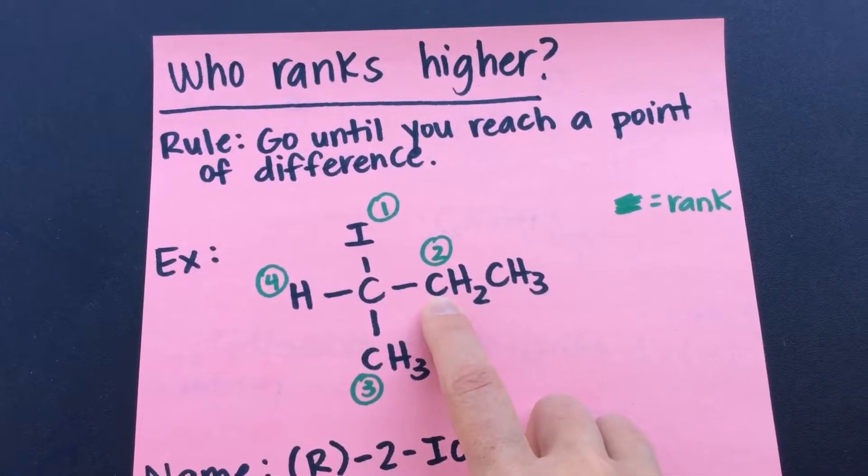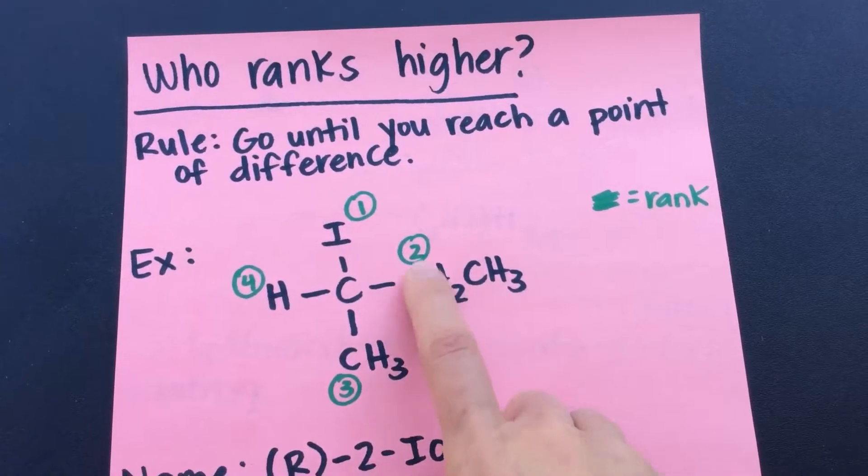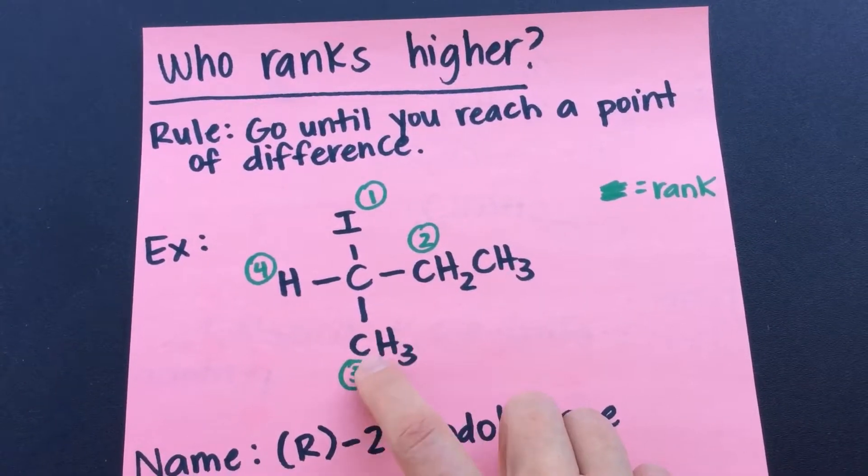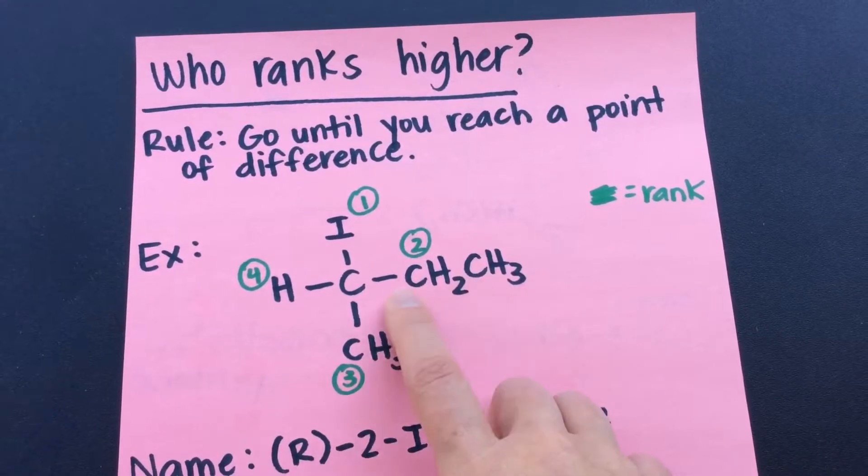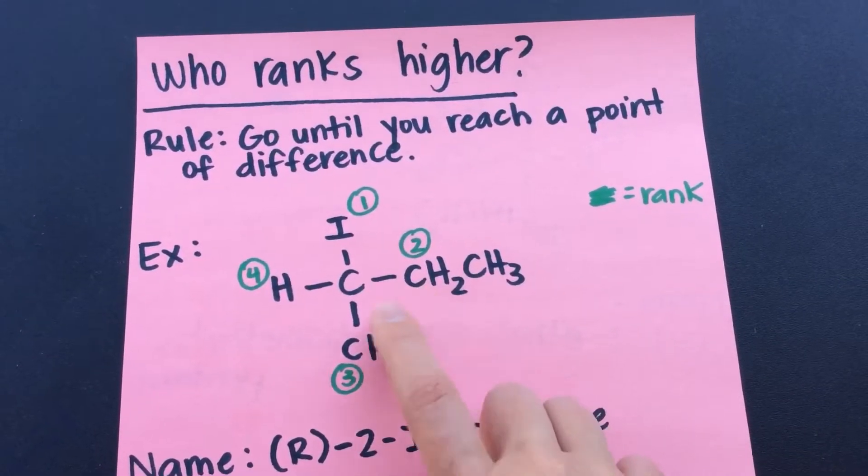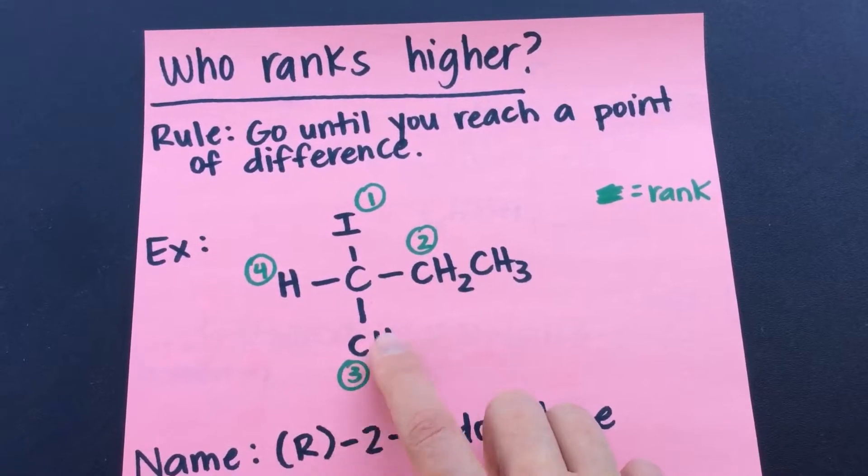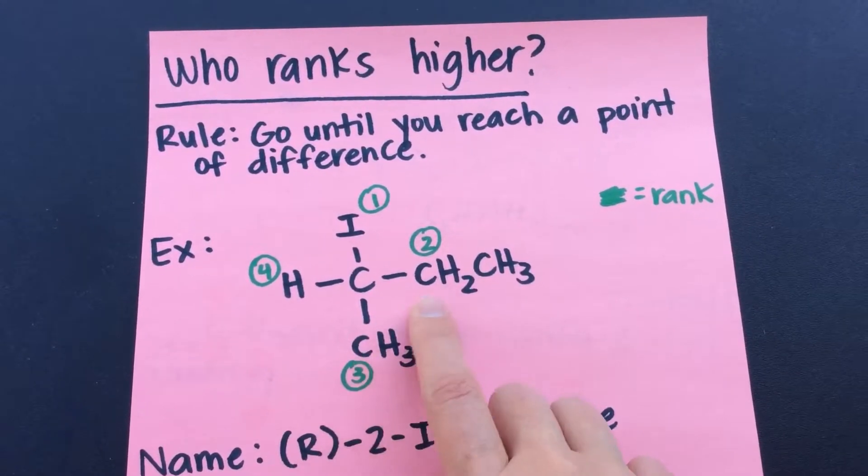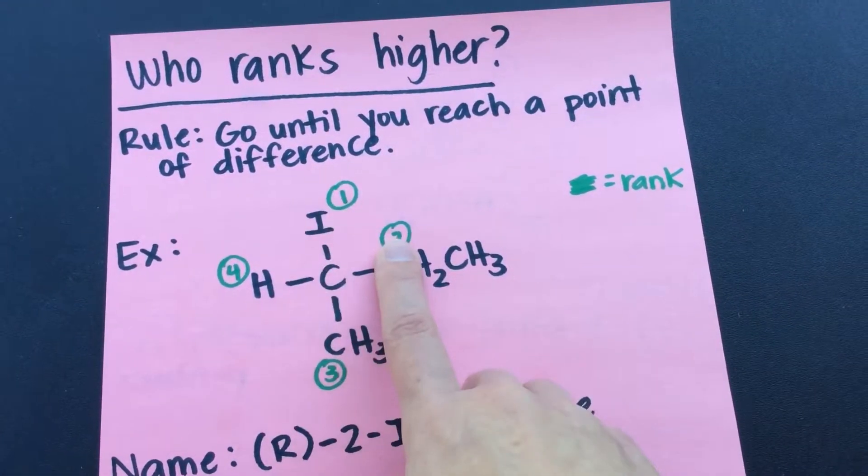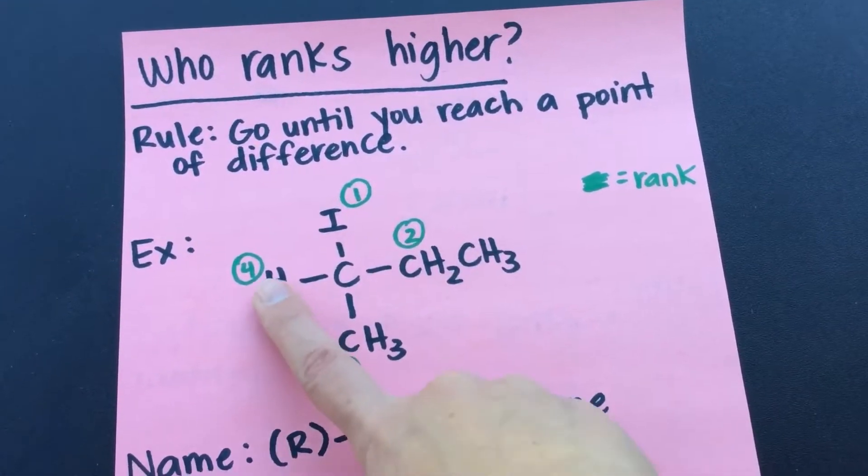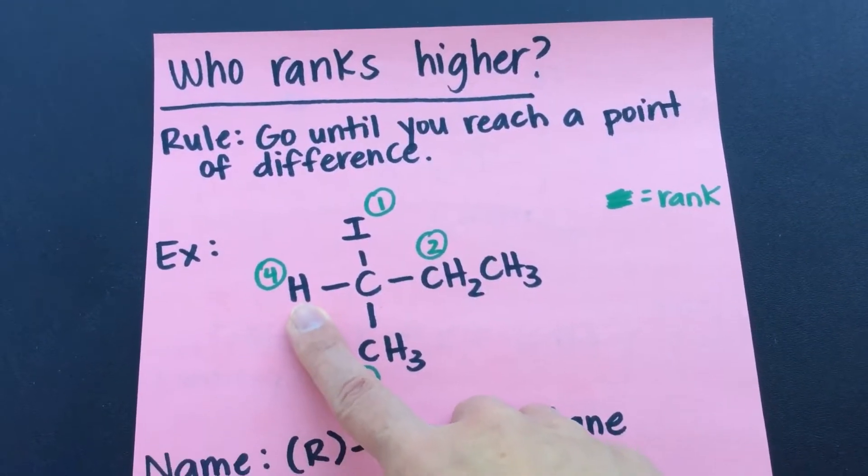This carbon is attached to another carbon, plus two hydrogens, whereas this carbon is only attached to three hydrogens. So this carbon being attached to another carbon makes it rank higher than this one who's only attached to three hydrogens. So you go until you reach a point of difference. That's why this one ranks one, then two, then three. And then obviously hydrogen's always going to be number four.